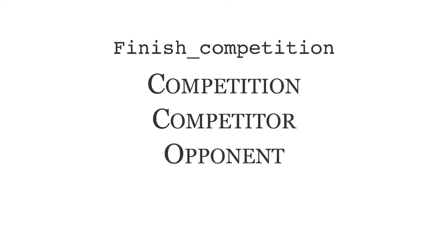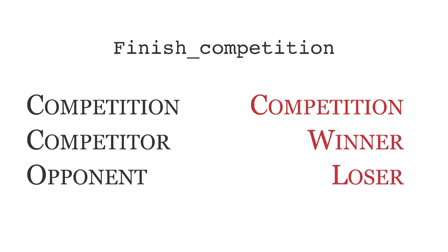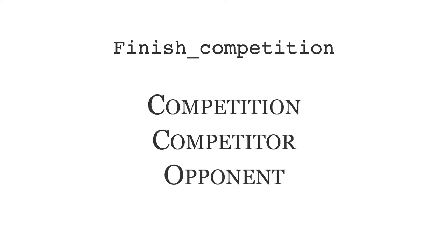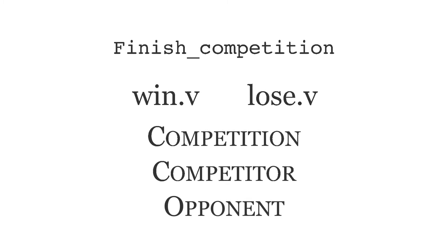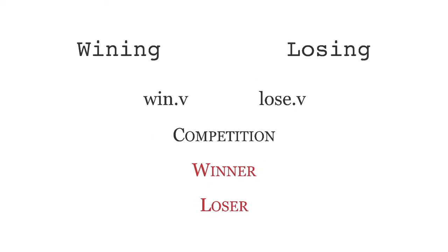Consider the finished competition frame, for example. In this frame, elements are defined as competition, competitor, and opponent — not as competition, winner, and loser. This is what makes it possible to have antonymous verbs such as win and lose evoking this same frame. If the elements were defined as winner and loser, we would need to have two perspectivized versions of the finishing competition frame, namely the winning and the losing frames.